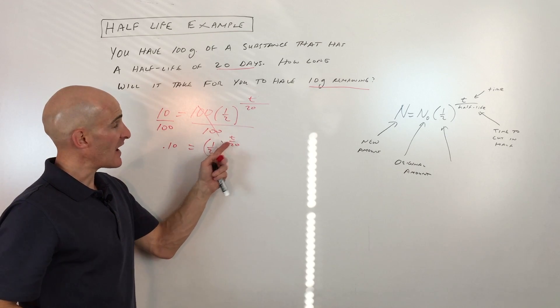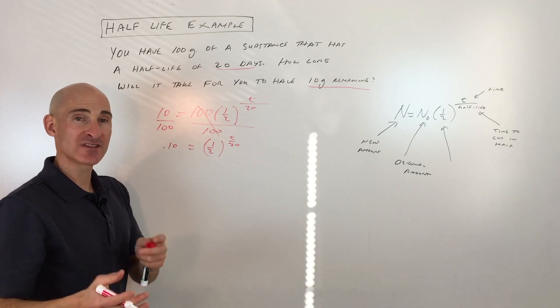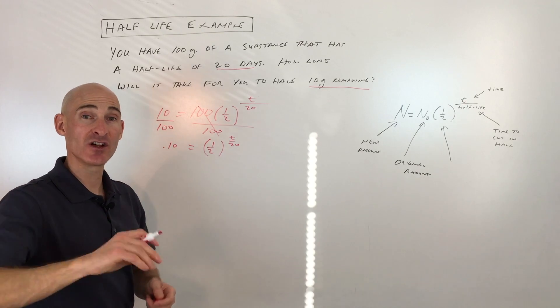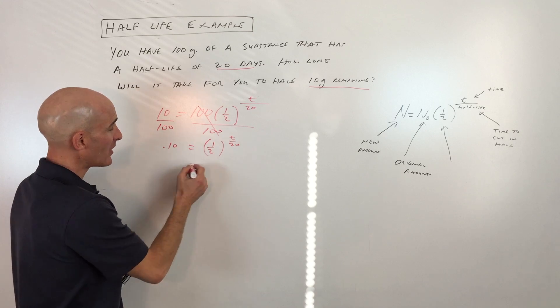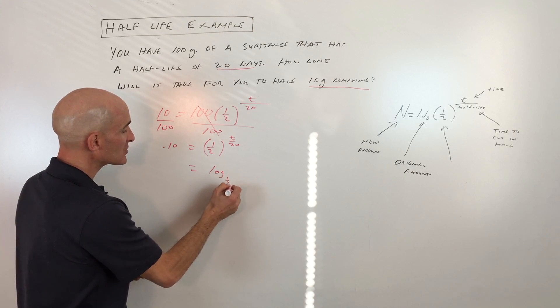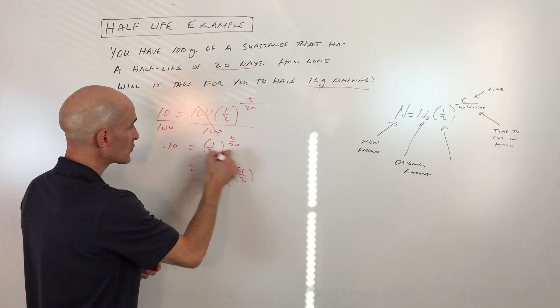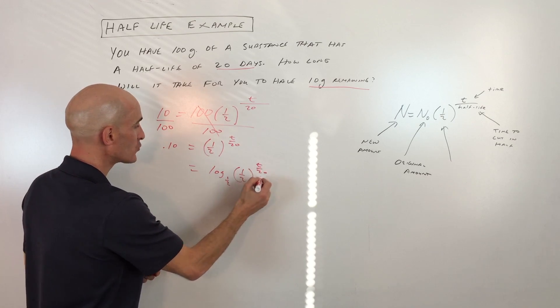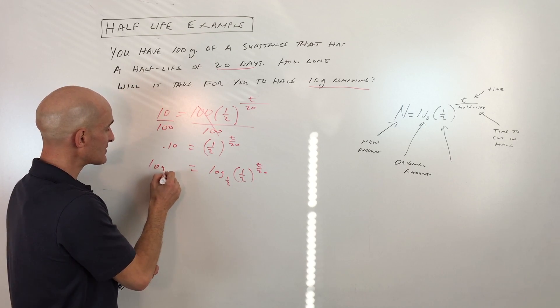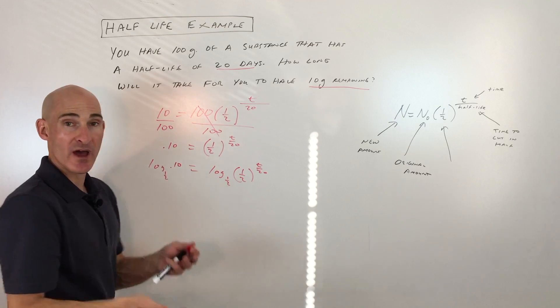Now because the variable is in the exponent position, we're going to do the opposite of exponentiating. We're going to take the logarithm of both sides. So because this is base one-half, let's take the log base one-half of this quantity here, one-half to the t over 20. And we're going to do the same thing to the left side of the equation because we want to keep it balanced, right?